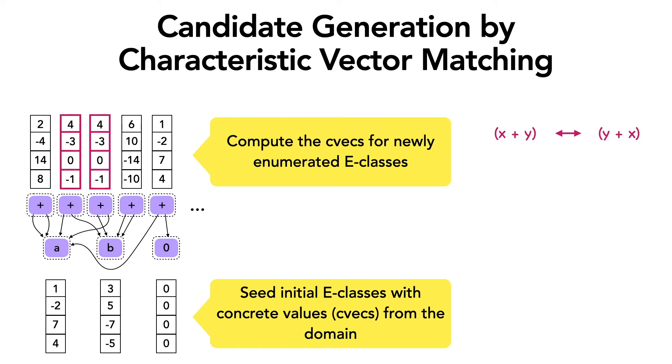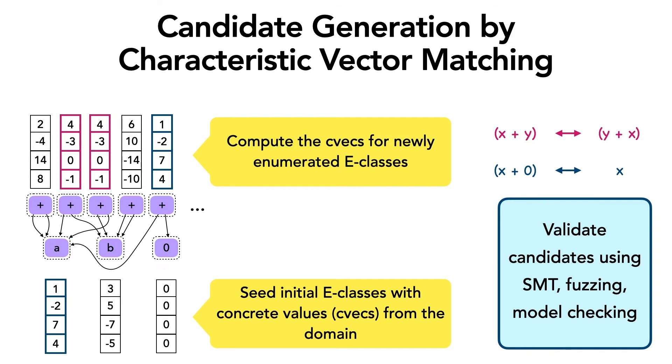When two e-classes have the same CVEC, that indicates a potential candidate. For example, here we have the commutativity of addition, and here we have the identity of addition.